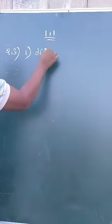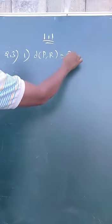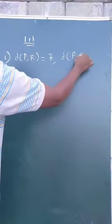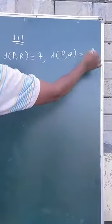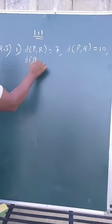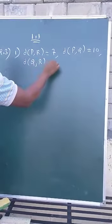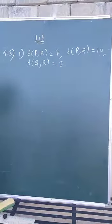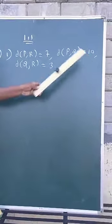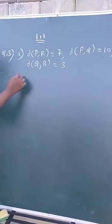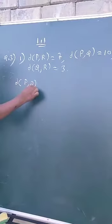Distance PR given 7, distance PQ given 10, and distance QR given 3. Now see, here 10 is greater than 7 and 3. So on the left-hand side, take the greater side,